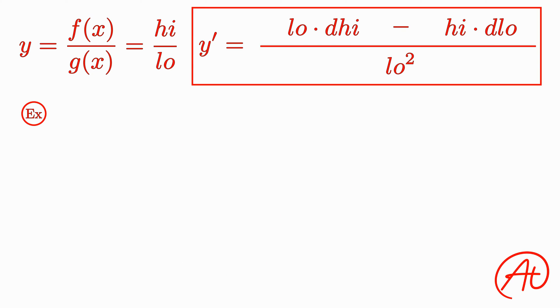Alright, let's look at one more example. Say we have y equals 4x plus 7 divided by sine of x. Once again, our high is 4x plus 7, and our low is sine of x.